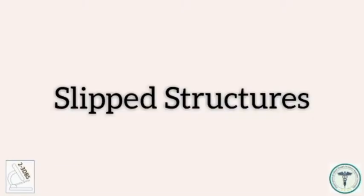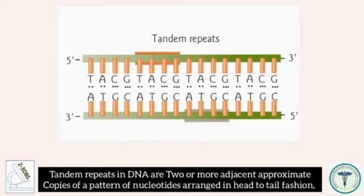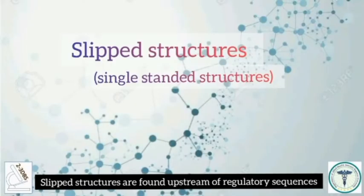Slipped structures occur at tandem or direct repeats. Tandem repeats in DNA are two or more adjacent approximate copies of a pattern of nucleotides arranged in head-to-tail fashion. Like the sequence in the figure, which contains four tandem repeats of TACG. Slipped structures are found upstream of regulatory sequences.